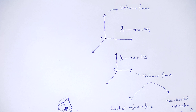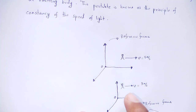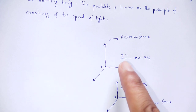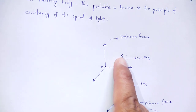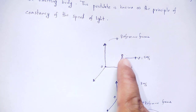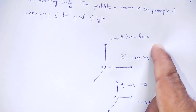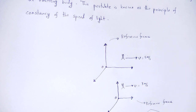The difficulty arises when we consider light. We need to consider which frame of reference we use for light. The speed of light from a source is 3 × 10⁸ meters per second.